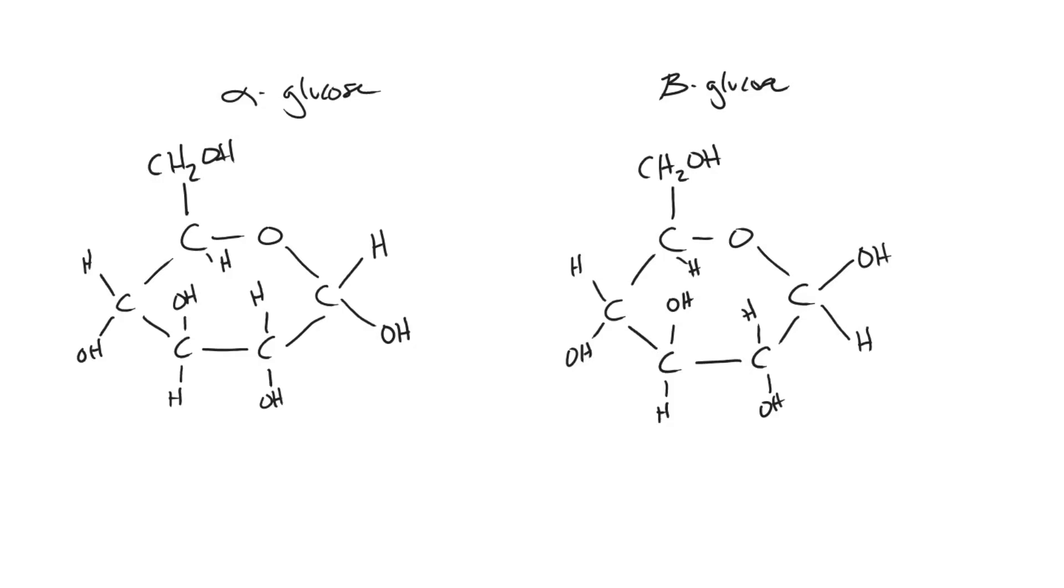One other way you can remember is if you look at the first and fourth carbon, alpha glucose has the hydroxide on the same side, and if you look at the fourth and first carbon on our beta glucose, you'll see that the hydroxide and hydrogens are switched.